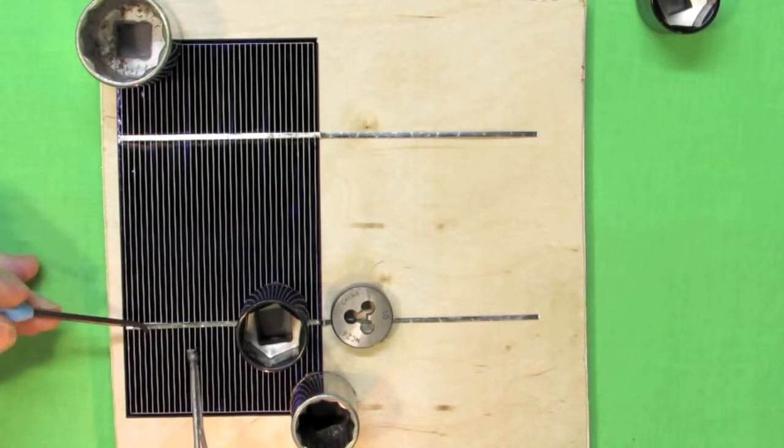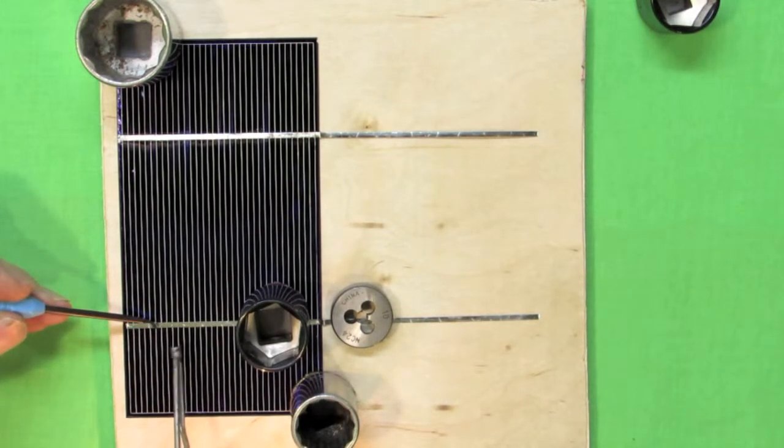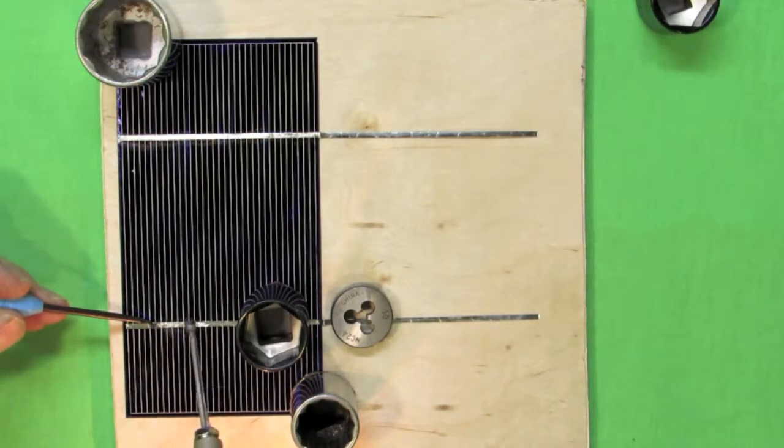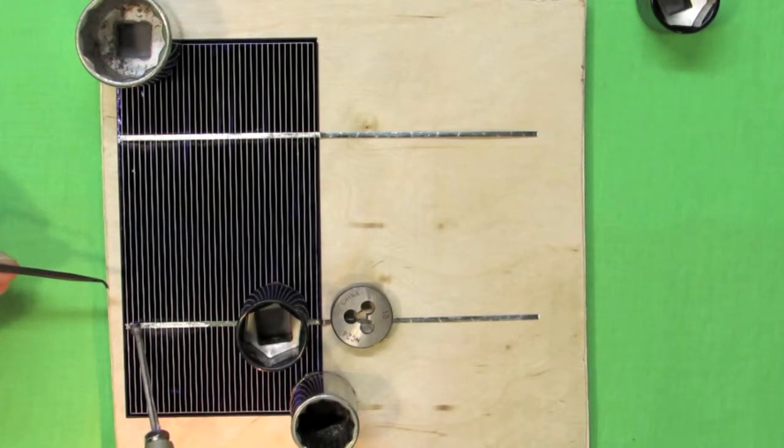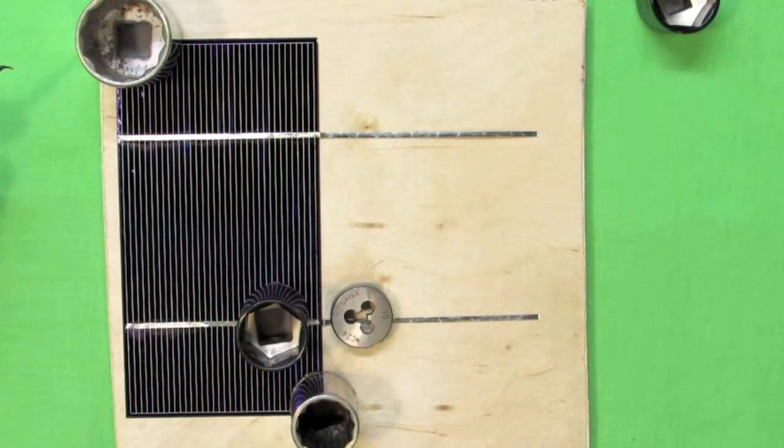Let's examine how I'm soldering this tabbing wire. Notice how I start to the left of the placement weight and what that does is it secures not only the tabbing wire but the solar cell itself. As I move away from the weight there's very little chance that either the tabbing wire or the solar cell will be moved by my action. We want them to be nice and steady. Placement is very important.